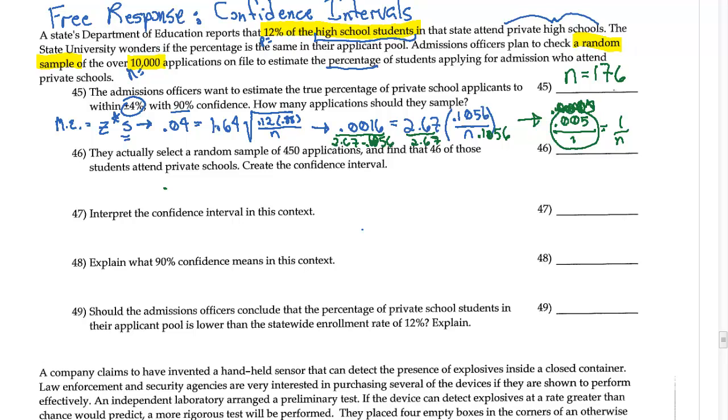So they just need to take a sample of 176 applications. Basically, I squared everything, and then I divided by what was in the numerator, and then I took the reciprocal of the fraction to get the N on the top. So you can follow that method for pretty much everything involving the margin of error, and you'll be okay. That same process.